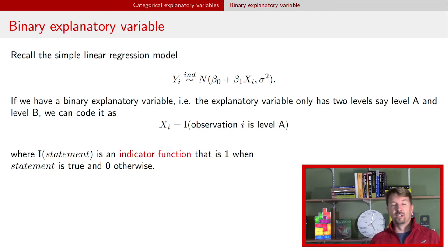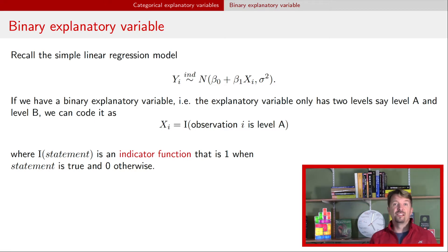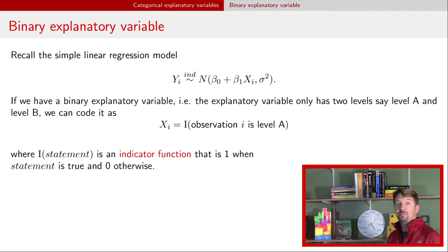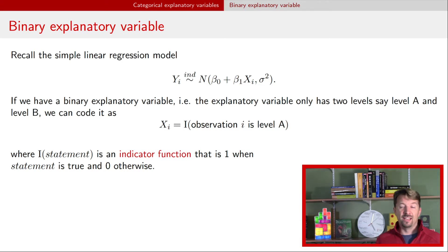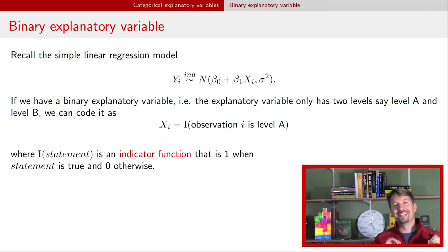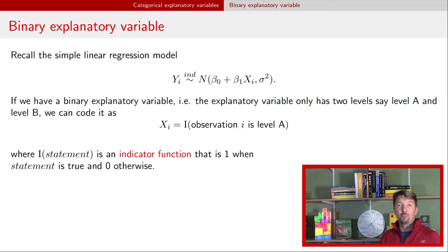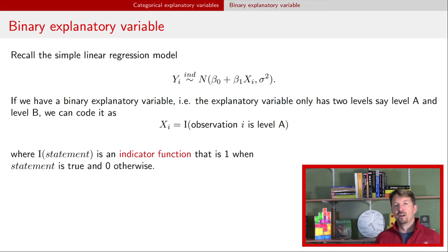It can only be 1 or 0. It's 1 if the statement is true and 0 if the statement is false. Now in the context of regression we have a whole bunch of observations, and we're going to look at every single one of those observations and ask: is the statement true? In this case, x_i for observation i is that observation i is level a of this explanatory variable. If that observation does have level a, the indicator function will be 1; if it's not level a — that is it's level b — then it will be 0. That's how we construct a numeric quantity from categorical explanatory variables. We'll refer to this x_i as a dummy variable, though some places call it an indicator variable.